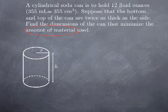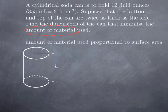We're looking for dimensions that minimize the amount of material, so we need to express this amount of material in terms of those dimensions. The first observation is that the amount of material used is going to be proportional to the surface area, but we also have to take into account the fact that the top and bottom are thicker than the side.